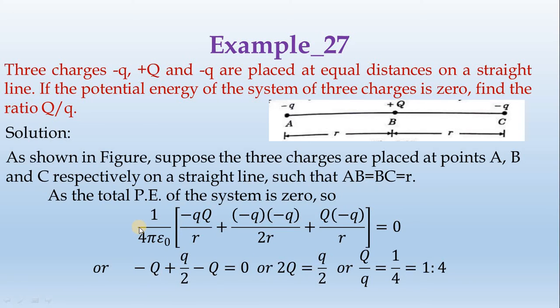Taking out the common terms, we get minus 2Q equals minus q by 2. Thus, 2Q equals q by 2, giving the ratio capital Q divided by small q equals 1 divided by 4. This is the ratio of 1 is to 4.